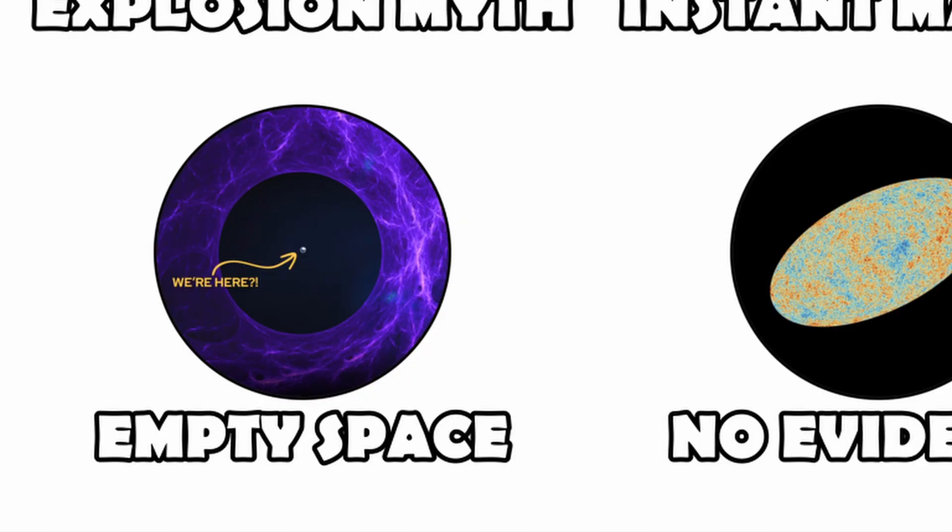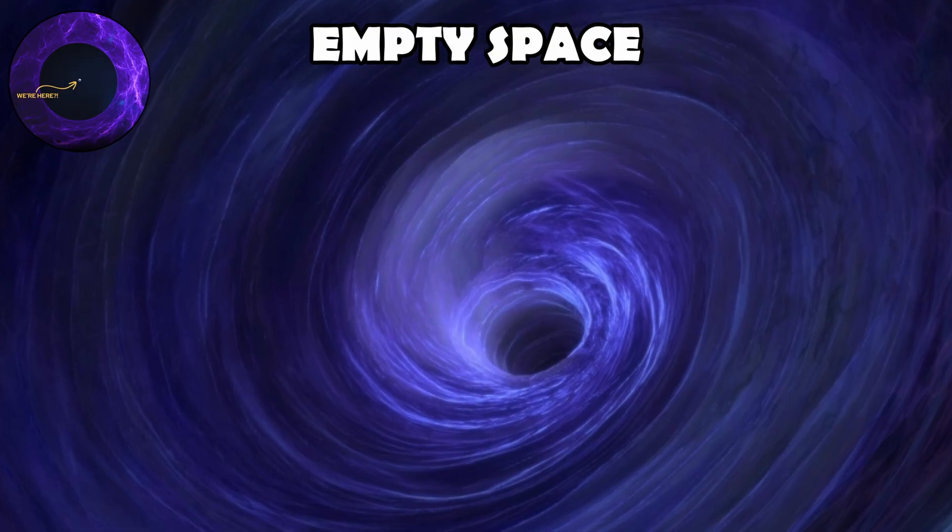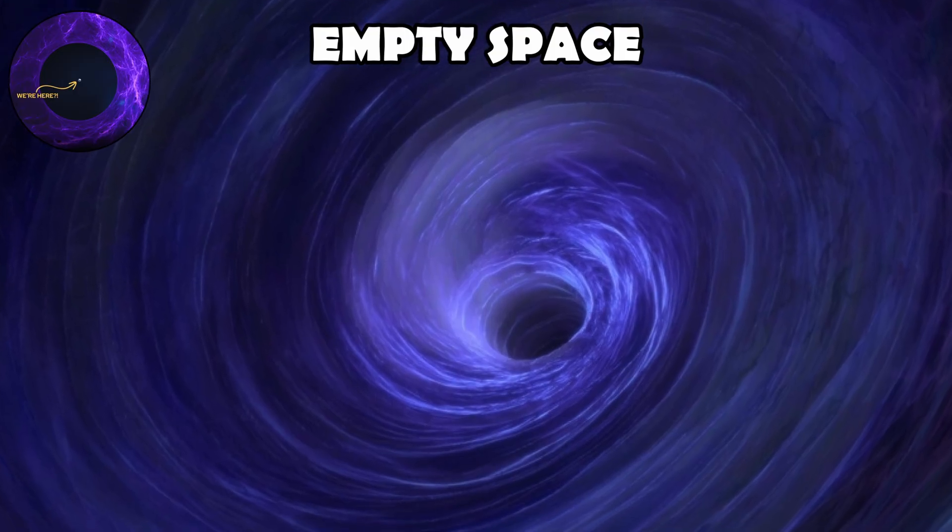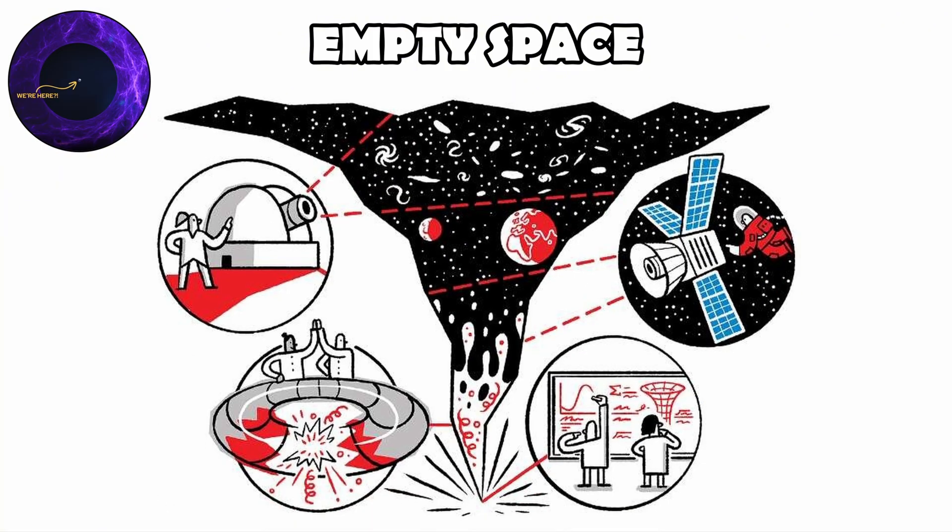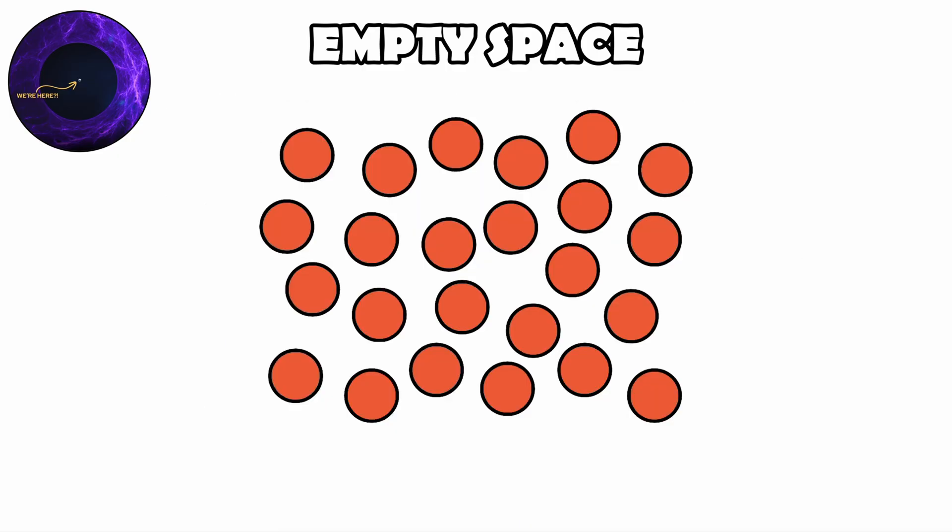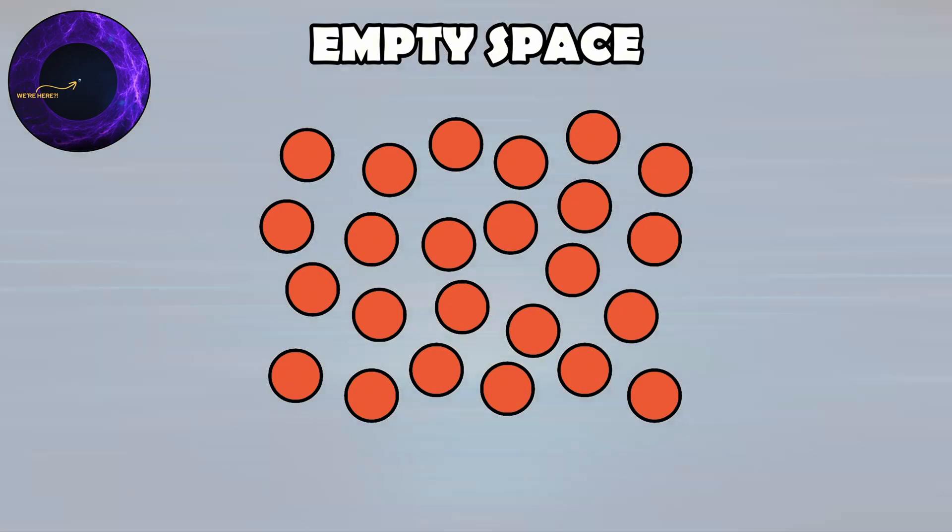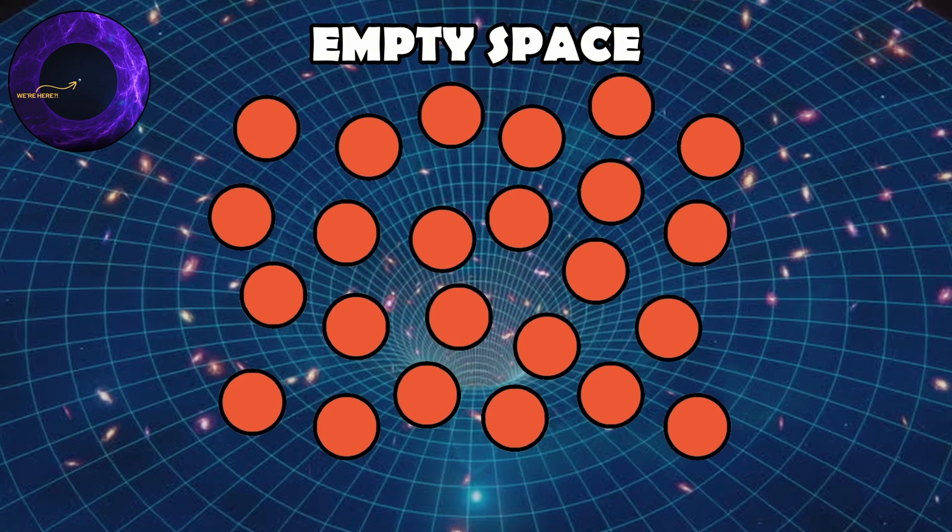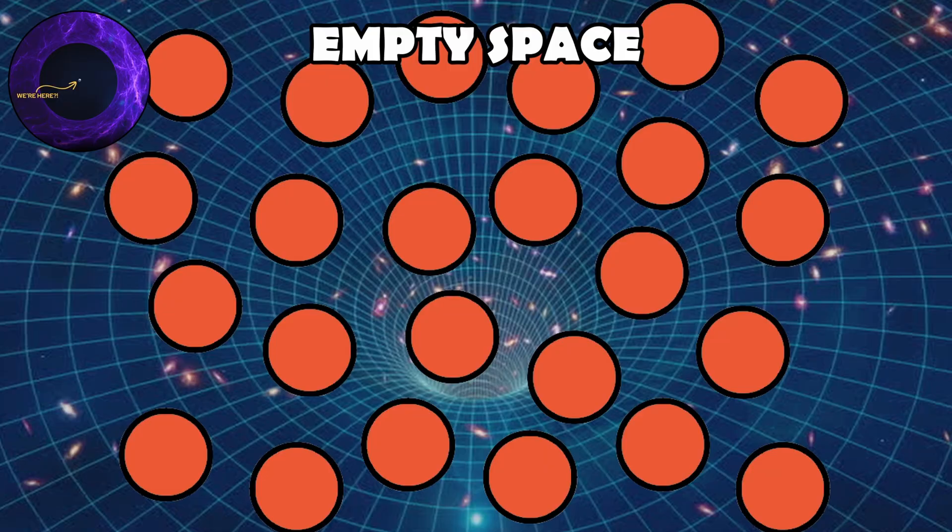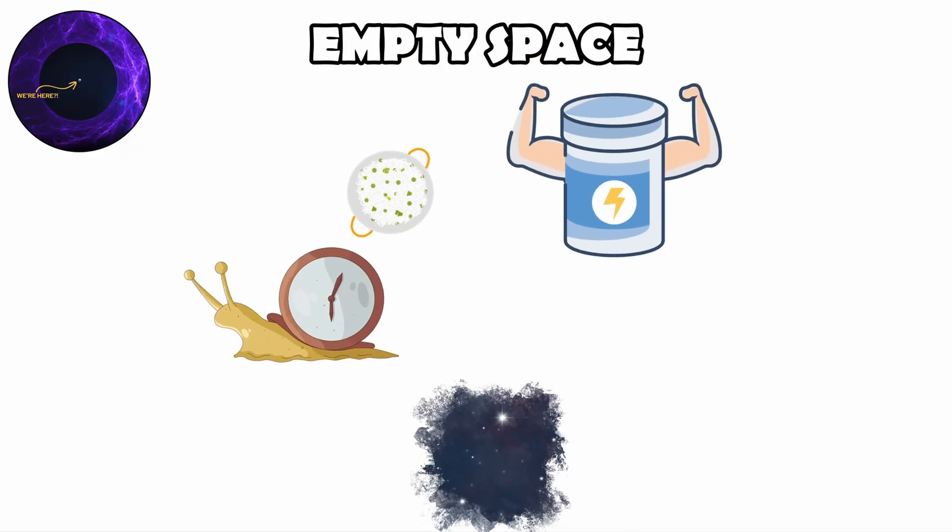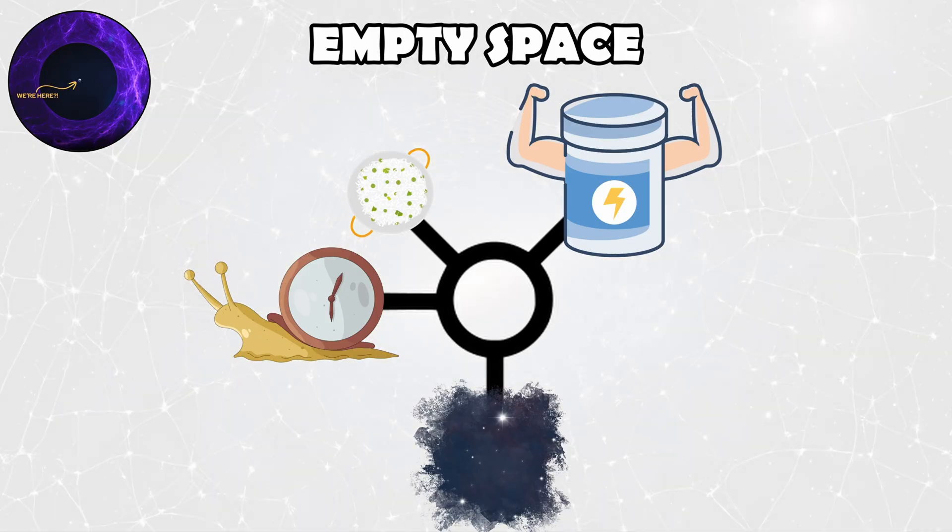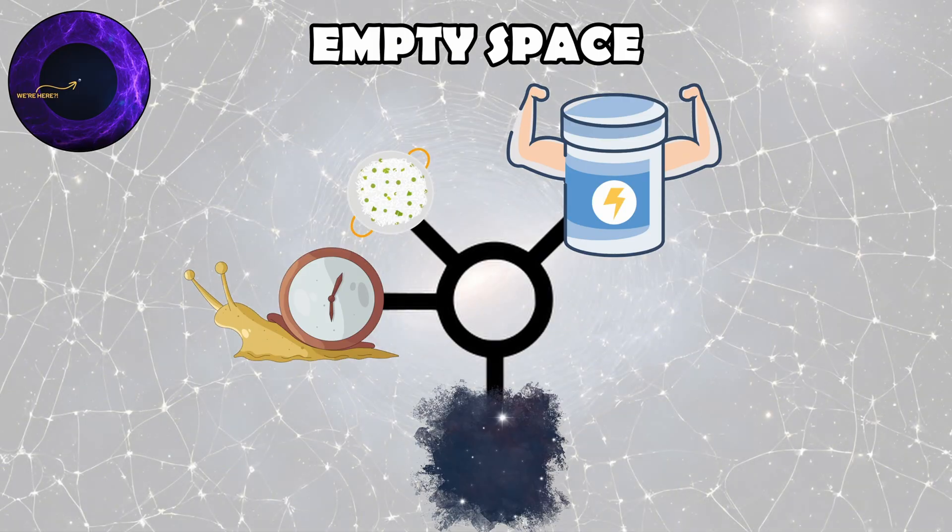Empty space. This idea assumes that there was a void already present and that matter expanded outward to fill it, but modern cosmology shows that space and time themselves came into existence during the Big Bang. Matter didn't spread into pre-existing emptiness. Rather, the expansion of space carried matter with it from the start. Space, time, matter, and energy are deeply connected. You cannot separate the fabric of the cosmos from the contents it holds.